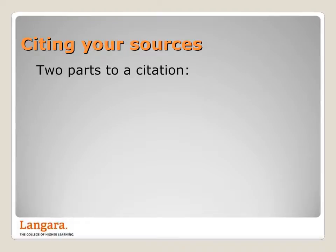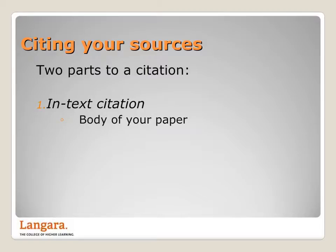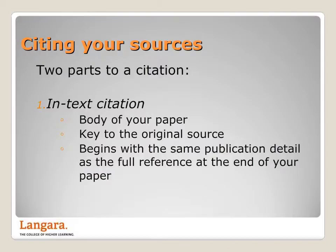The first part is the in-text citation. This appears in the body of your paper. It gives readers an easy-to-follow key to the original source and begins with the same publication detail as the full reference at the end of your paper — for example, the author's last name. Because the in-text citation and full reference begin with the same publication detail, often the author's last name, it's easy to move from the in-text citation to the full reference at the end of your paper.